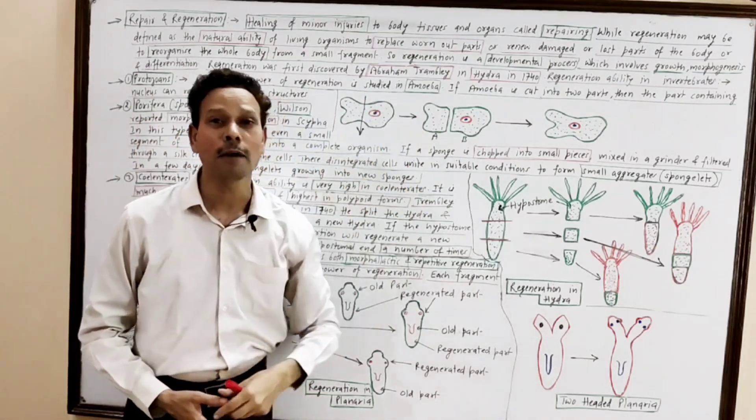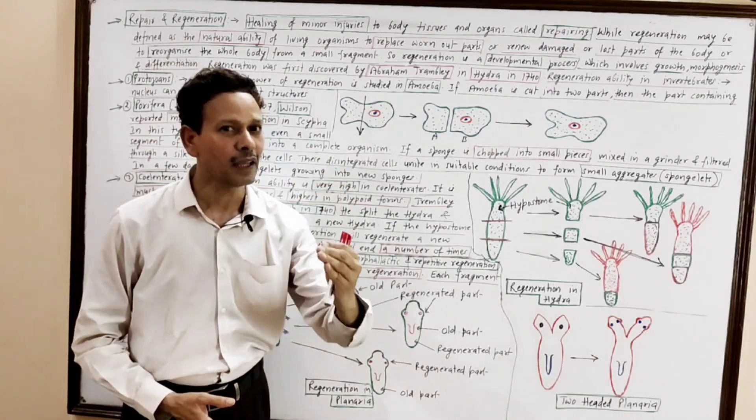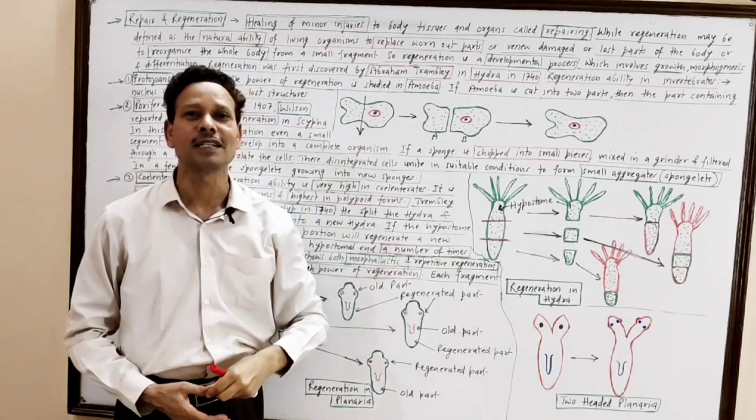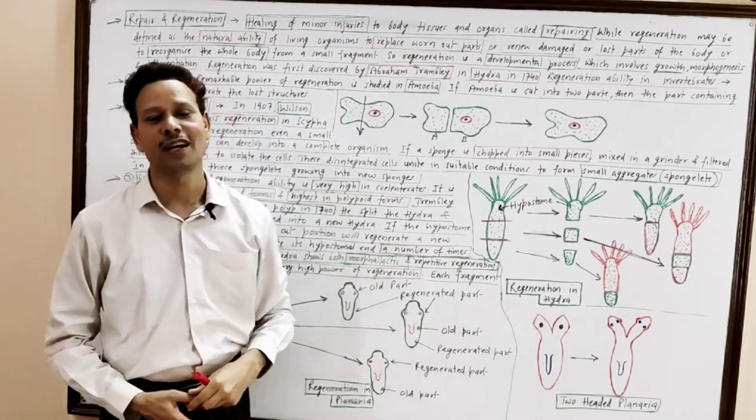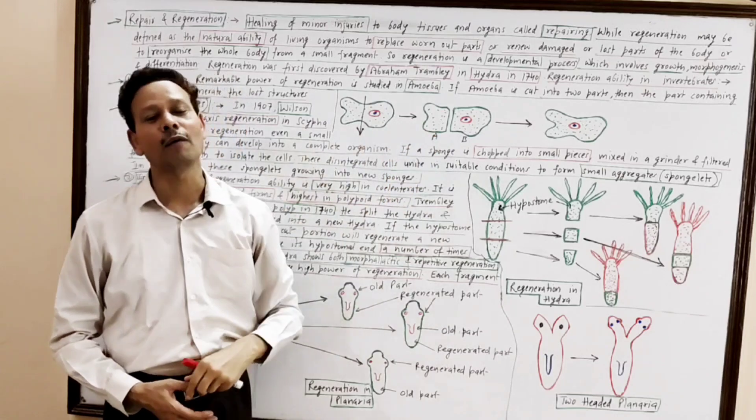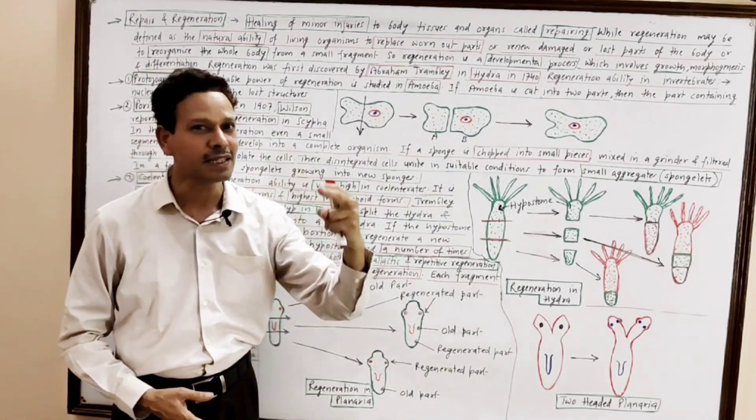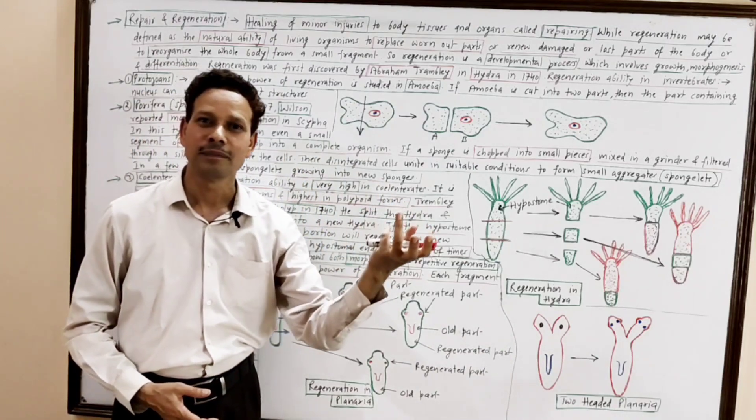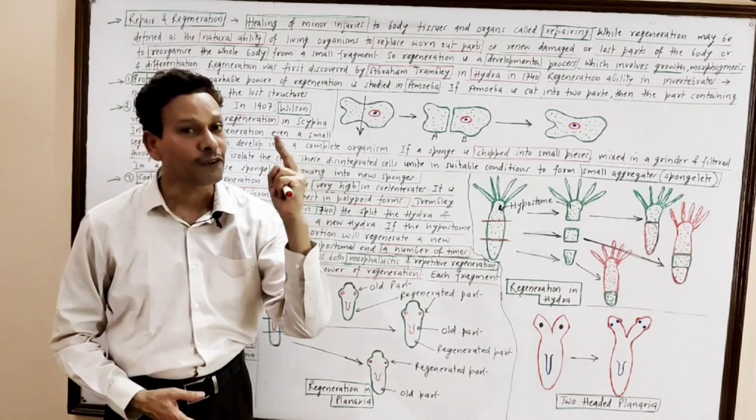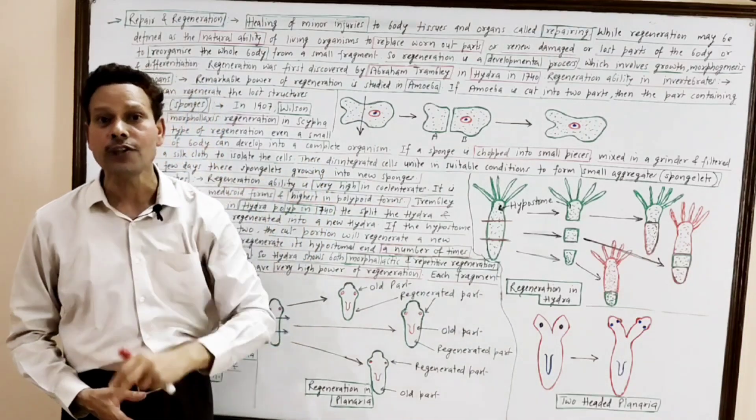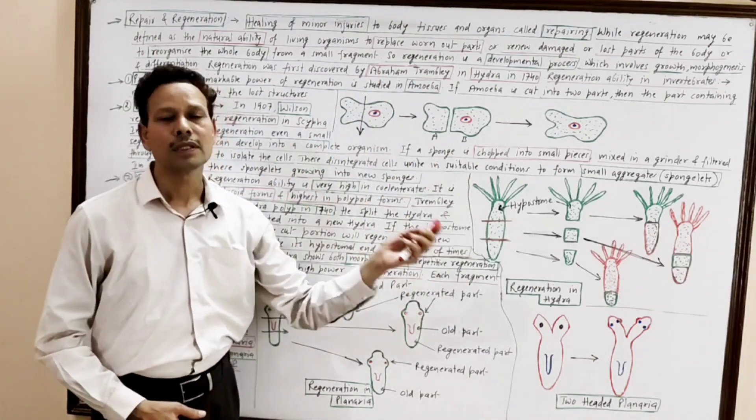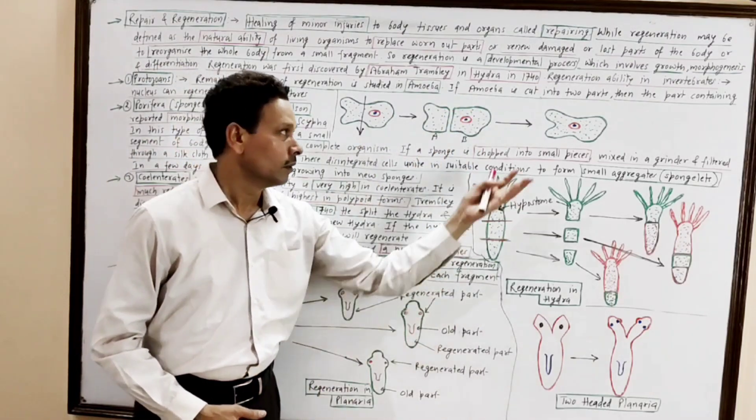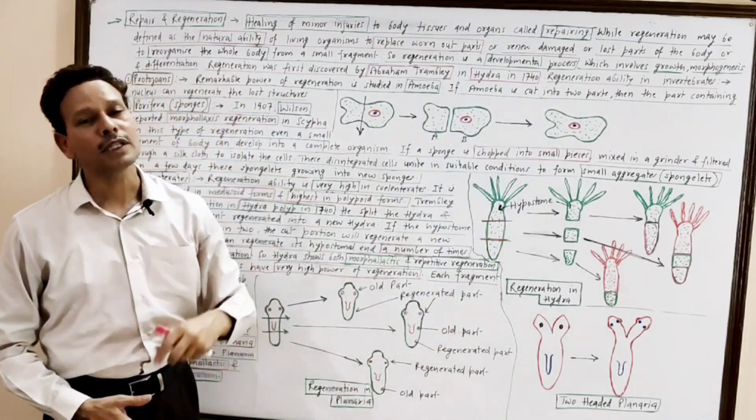Dear students, this entire process of regeneration was discovered by Abraham Tremblay in 1740 and he performed experiments on Hydra. This process is a developmental process and this repair, regeneration involves growth, morphogenesis and differentiation of body cells and tissues. Here, some examples of invertebrates and vertebrates to explain the process of regeneration.